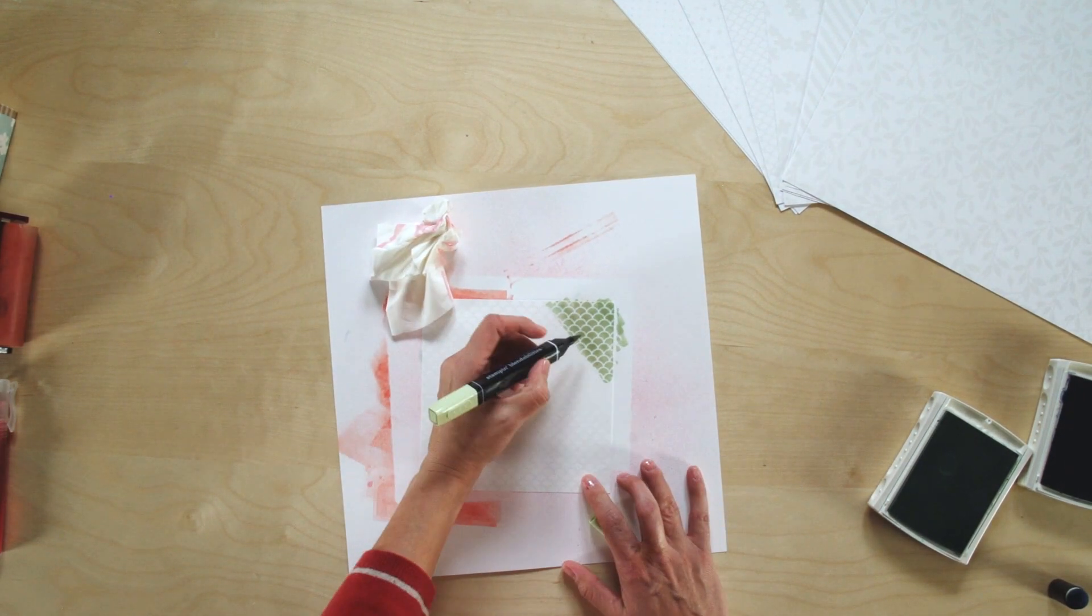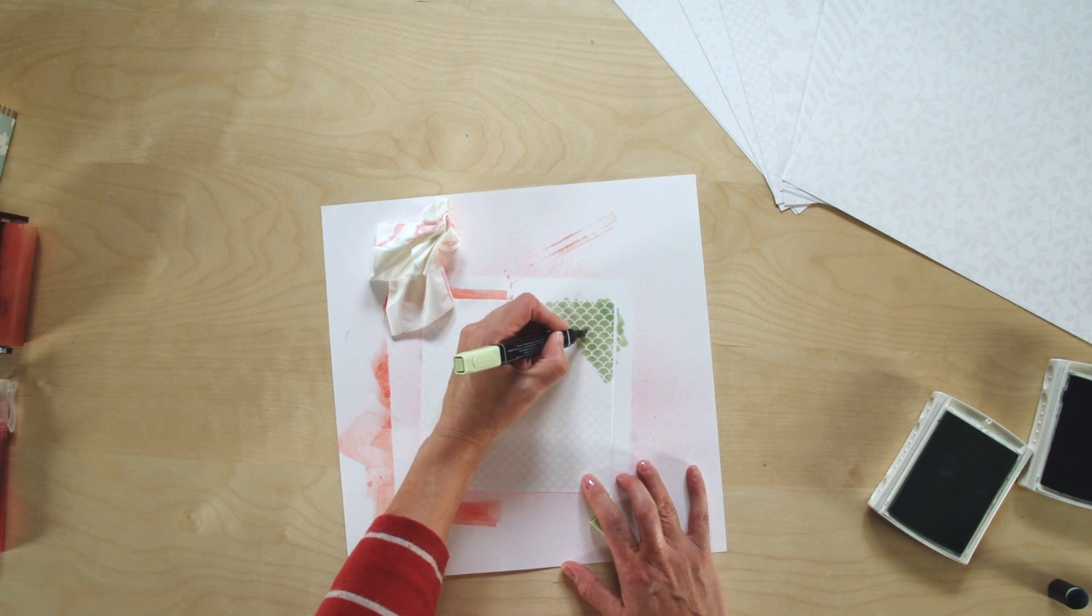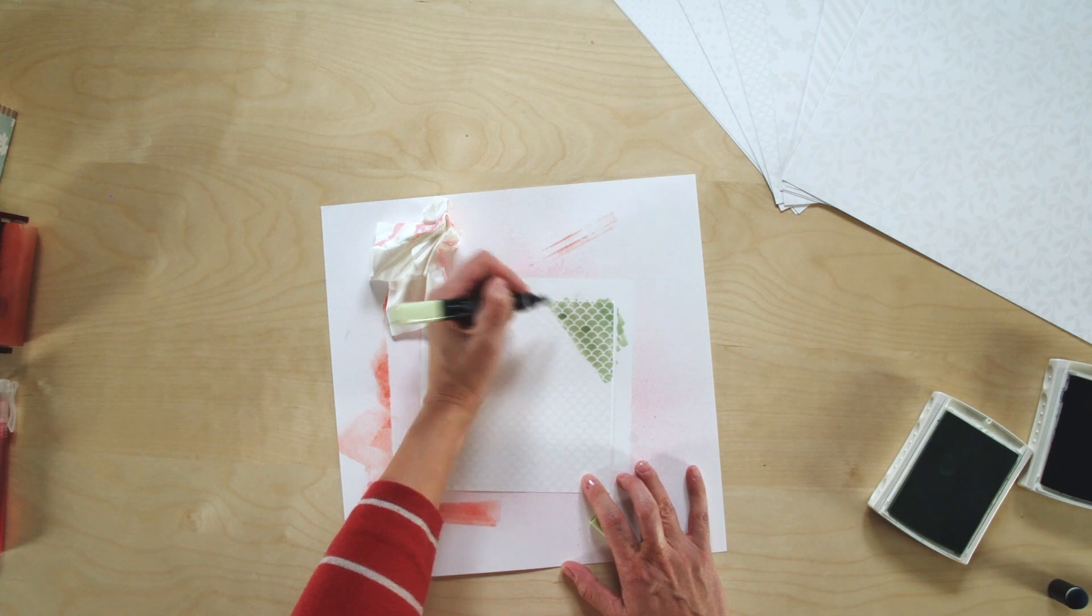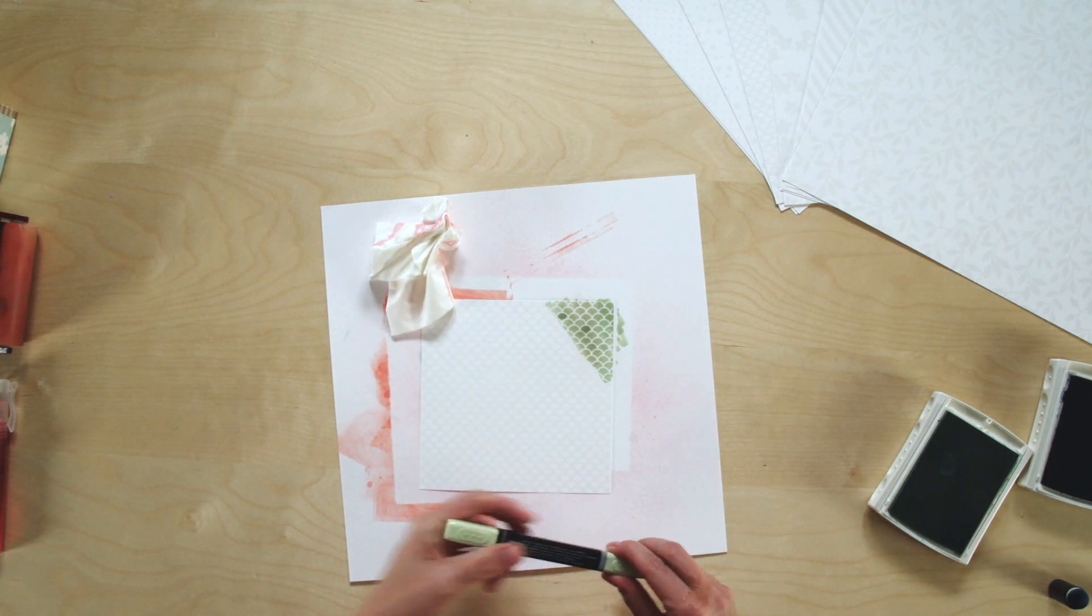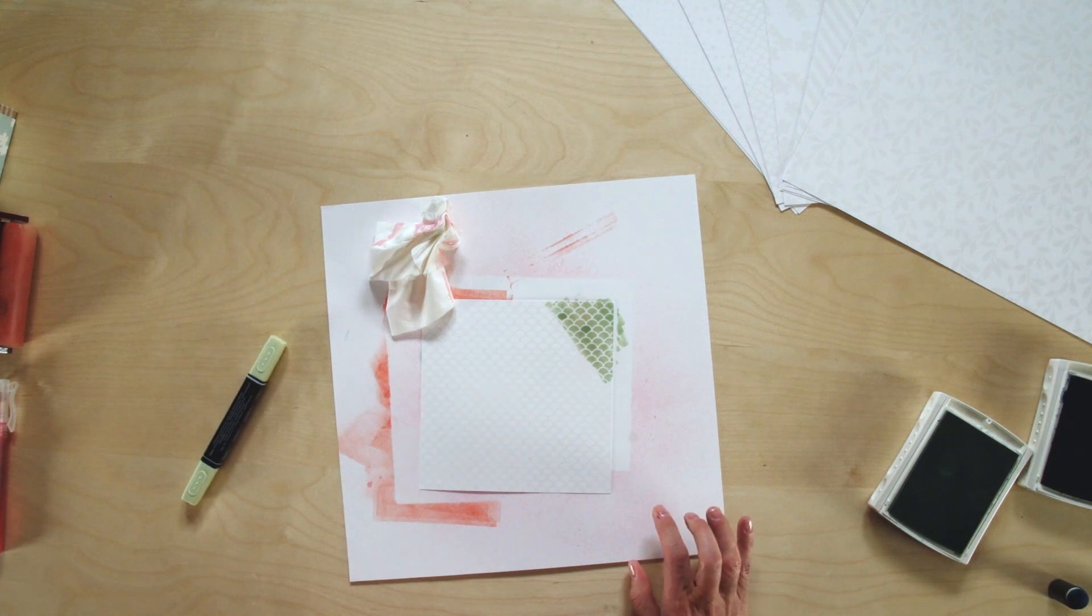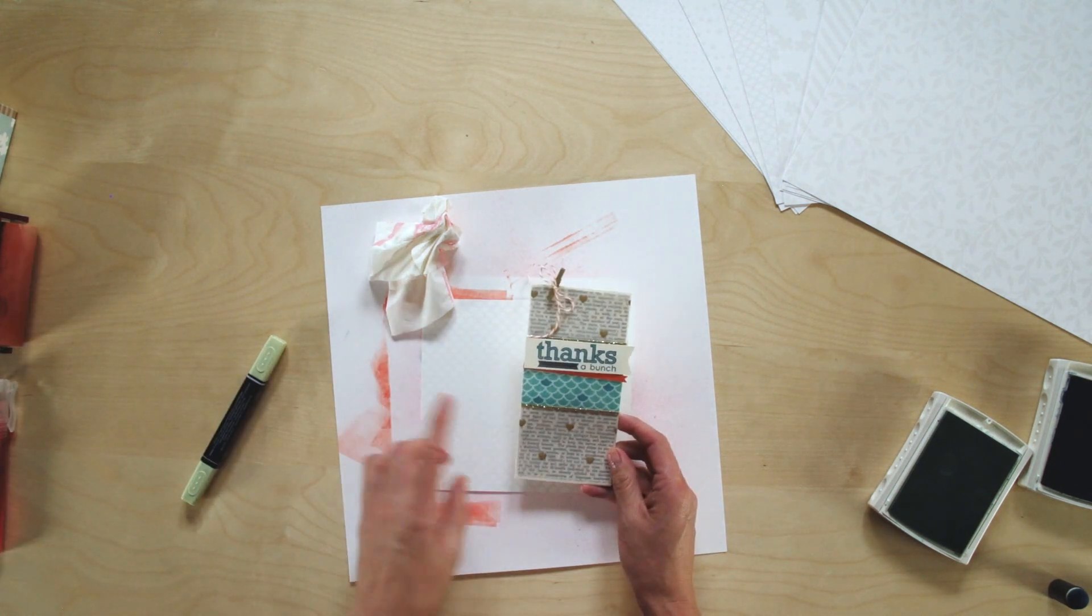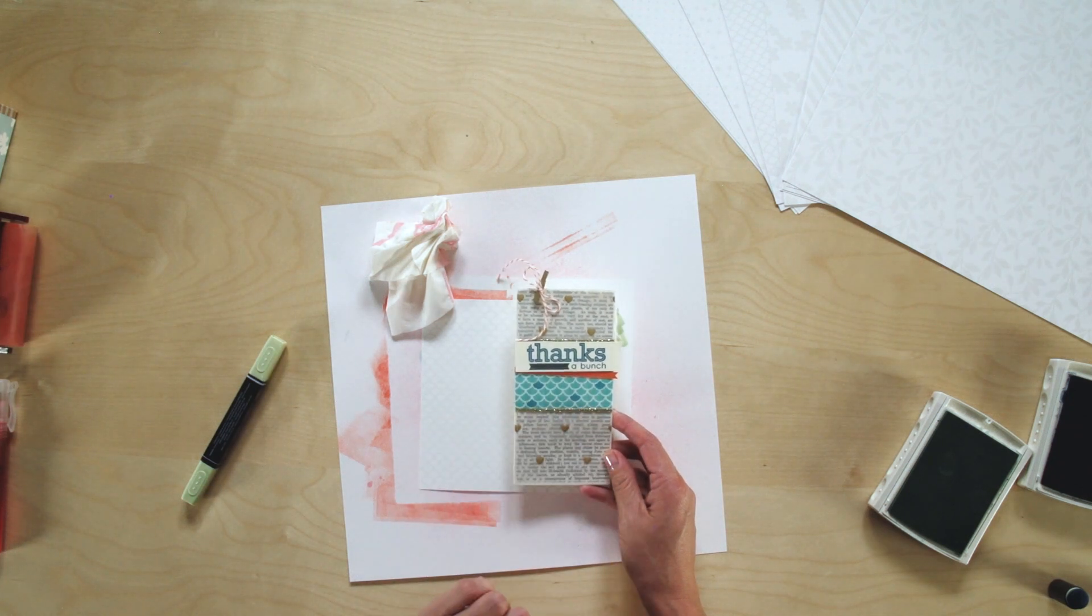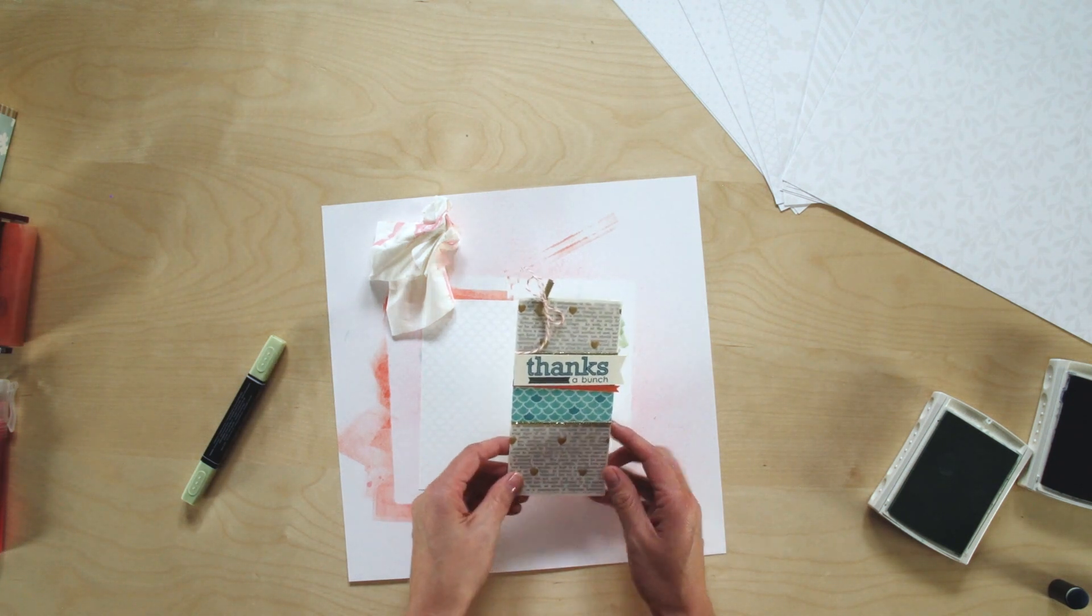This one is really fun because you can take the different colors of Blendabilities and go in and do some different accents of color in the scallop pattern there to get some darker scallops or some lighter scallops, all using the Blendabilities markers. And here's a finished sample we've done using that one. You can see those little scallops there that are just a little bit darker that really makes that pattern pop.